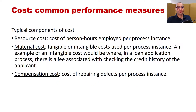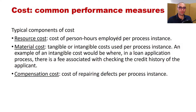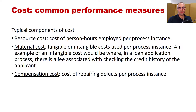Typical costs include the resource cost, which is the salary or per-hour rate for resources inside the organization; the material cost, which is the cost of materials used to generate or build the outcome of the process; and the compensation cost, which represents the cost paid to compensate for delays or defects. Resource cost can be reduced through performance improvement; material cost cannot be directly controlled within the process; and compensation cost can be reduced by reducing the defect rate.